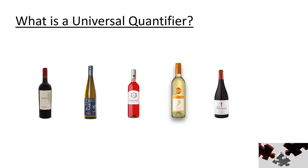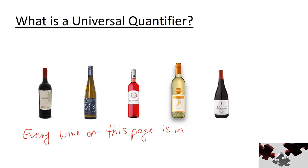A statement involving all objects in a particular set contains a universal quantifier and uses terminology like every, for all, or for each. For example, every wine on this page is in a glass bottle. If you think you can make up other statements involving universal quantifiers, feel free to add them below in the comments to help out other students.